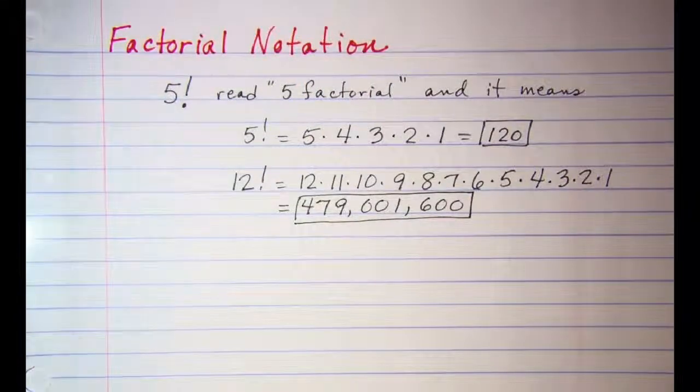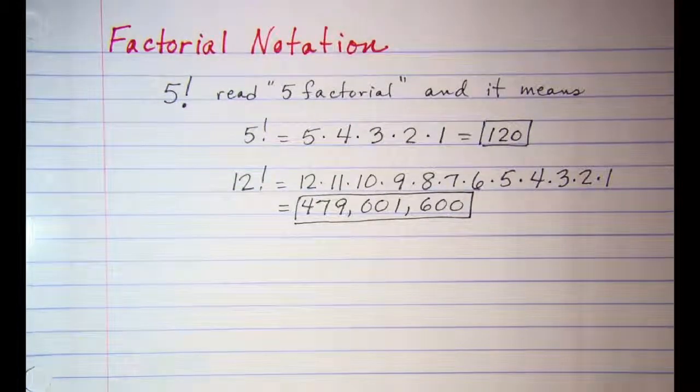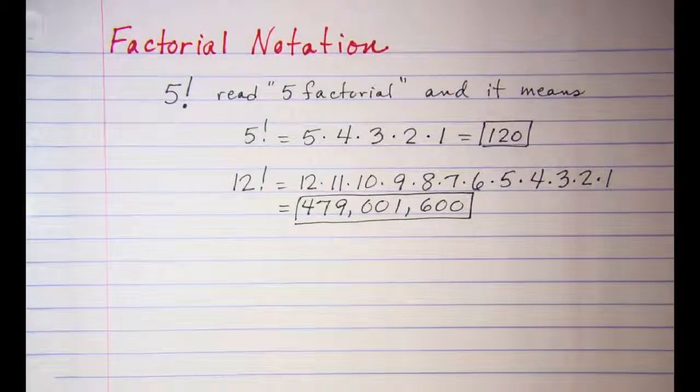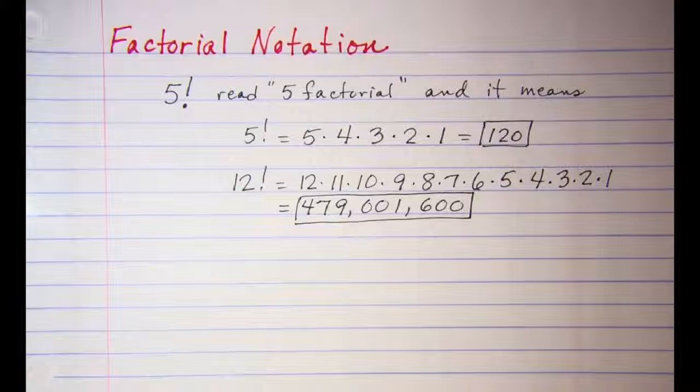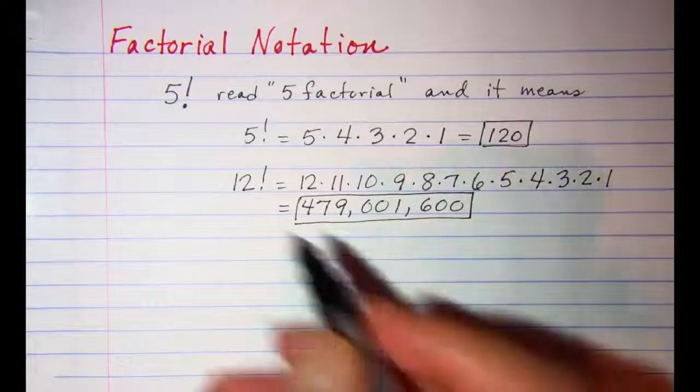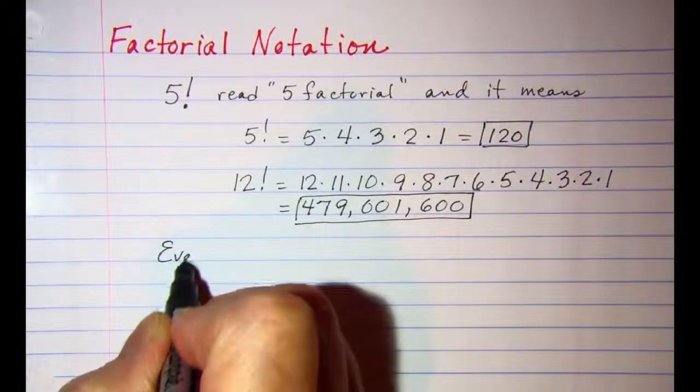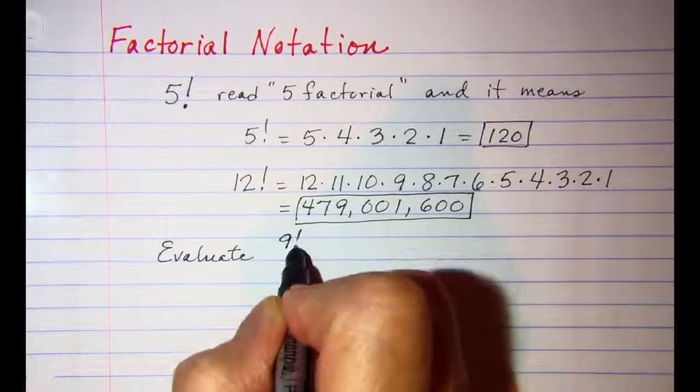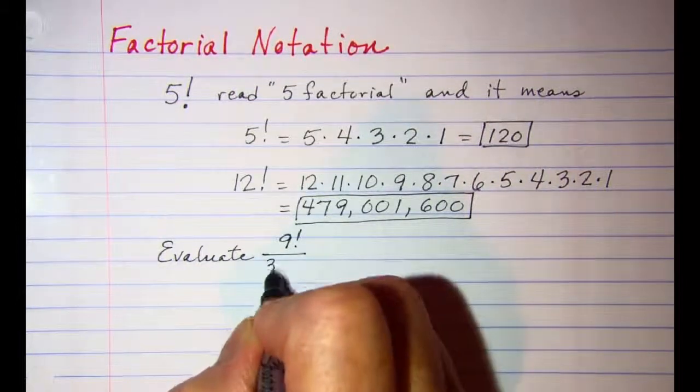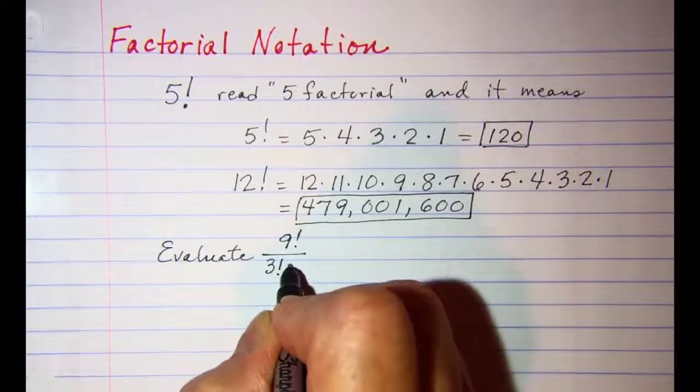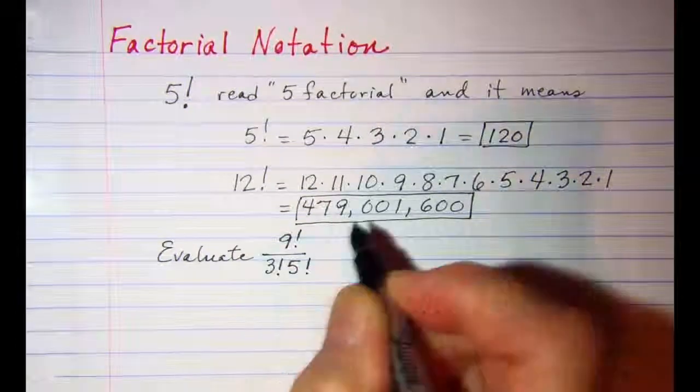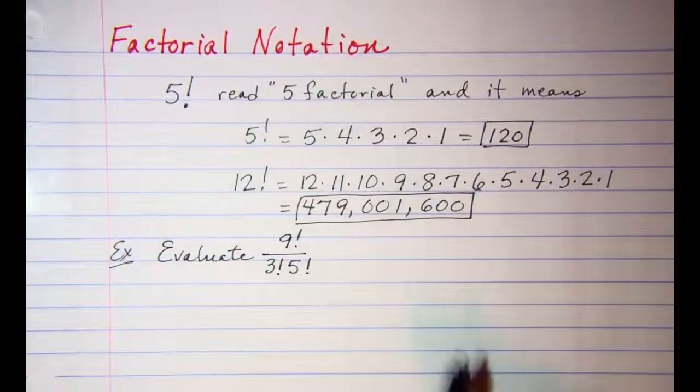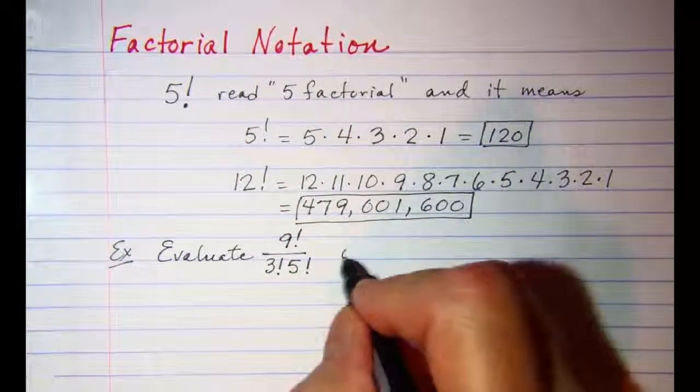Since the factorial product can quickly become very big, it sometimes is necessary to simplify a factorial expression before evaluating. So let's evaluate 9! ÷ (3! × 5!), and let's do this without a calculator.